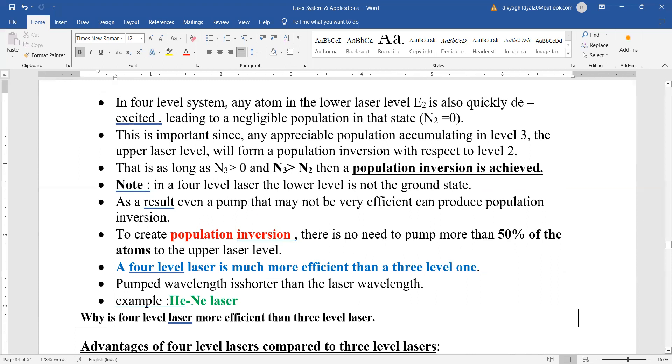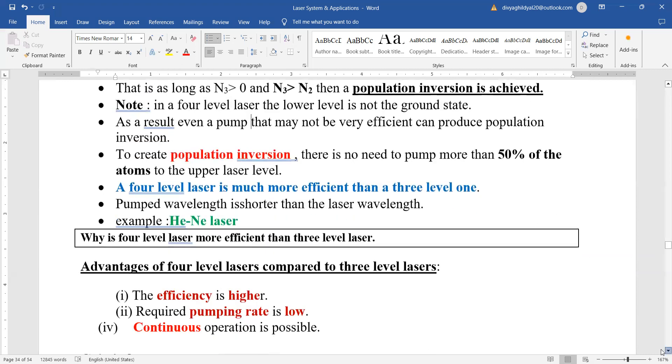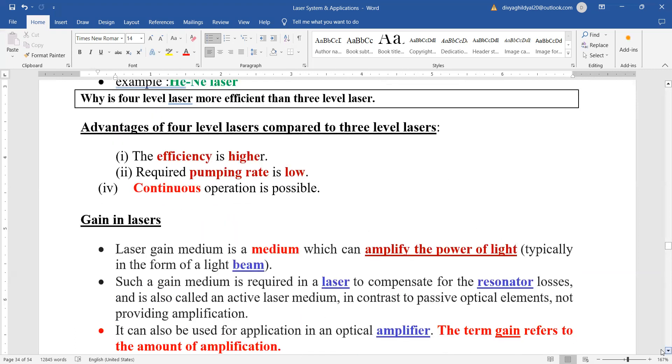Common example you can remember for four level is the helium neon laser, which gives us a continuous output and we do not require any cooling system. More efficient, that efficiency is higher, pumping rate is low, continuous operation is possible. Thank you.